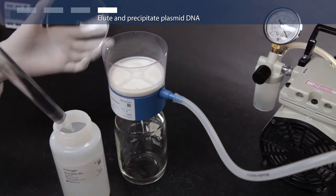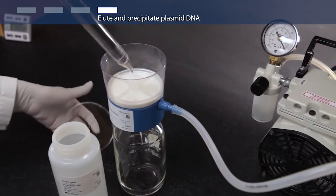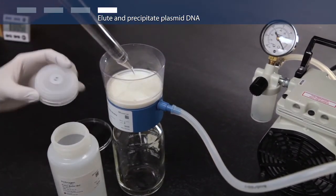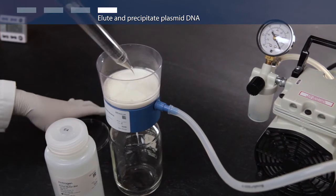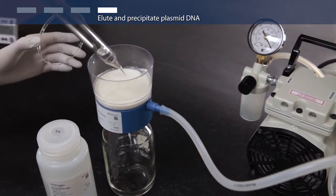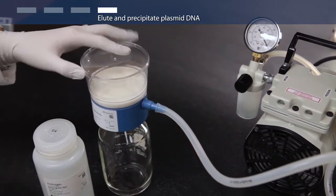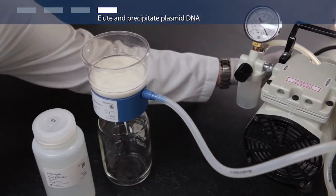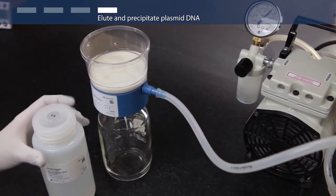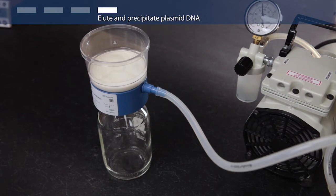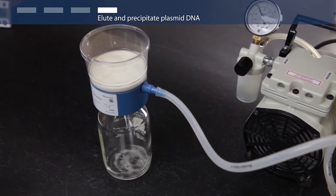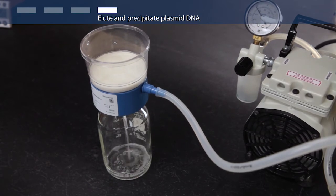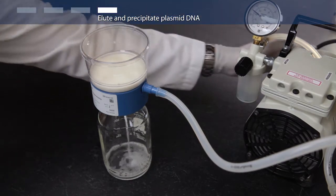To elute your plasmid DNA, first add 50 milliliters of elution buffer to the DNA binding cartridge. Apply a soft vacuum and draw 10 to 20 milliliters of solution. Incubate for one minute. Then again, apply a soft vacuum until all the liquid has passed from the cartridge.